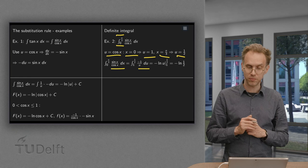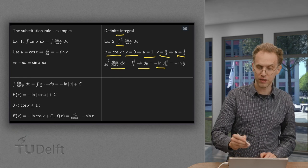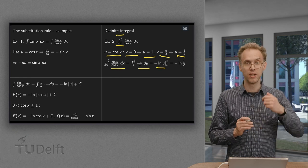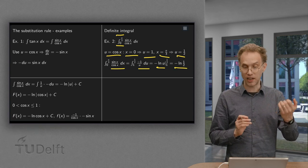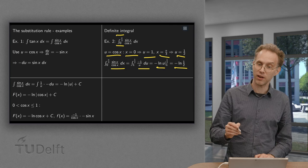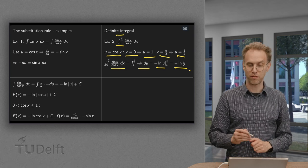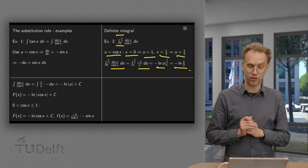And then we compute, again, minus ln of u, then between the boundaries, minus ln of 1/2, minus minus ln of 1, but the ln of 1 equals 0. So there we have the minus ln of 1/2 or the ln of 2, if you want.